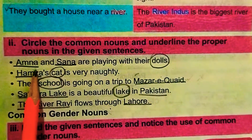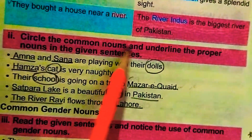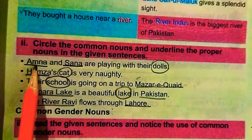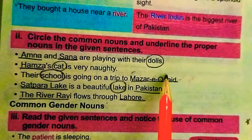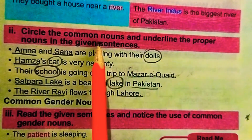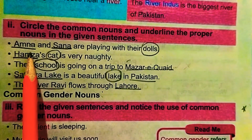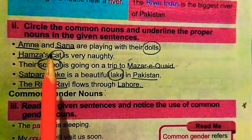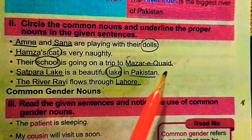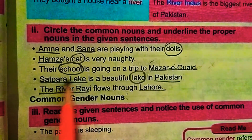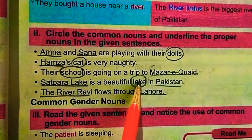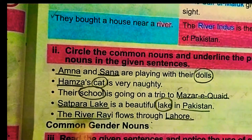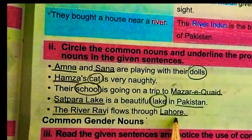In the exercise, we have to circle common nouns and underline proper nouns. Sana, Amna — proper nouns. Doll — common noun. Hamza — proper noun. Cat — common noun. School — common noun. Mazar-e-Quaid — proper noun. Saif-ul-Maluk Lake — proper noun. Pakistan — proper noun. The River Ravi — proper noun. Lahore — proper noun.